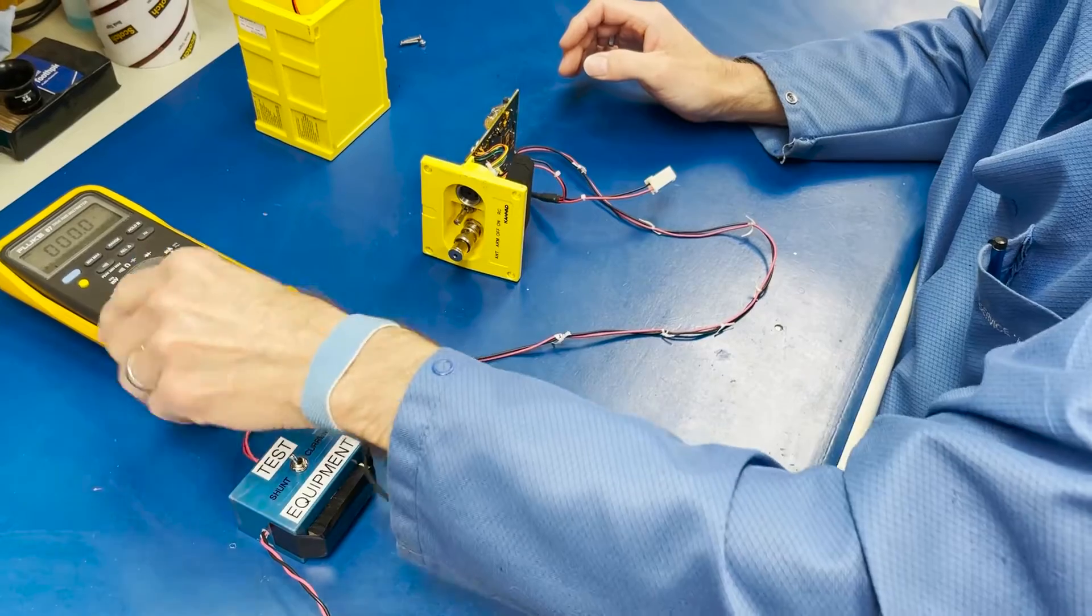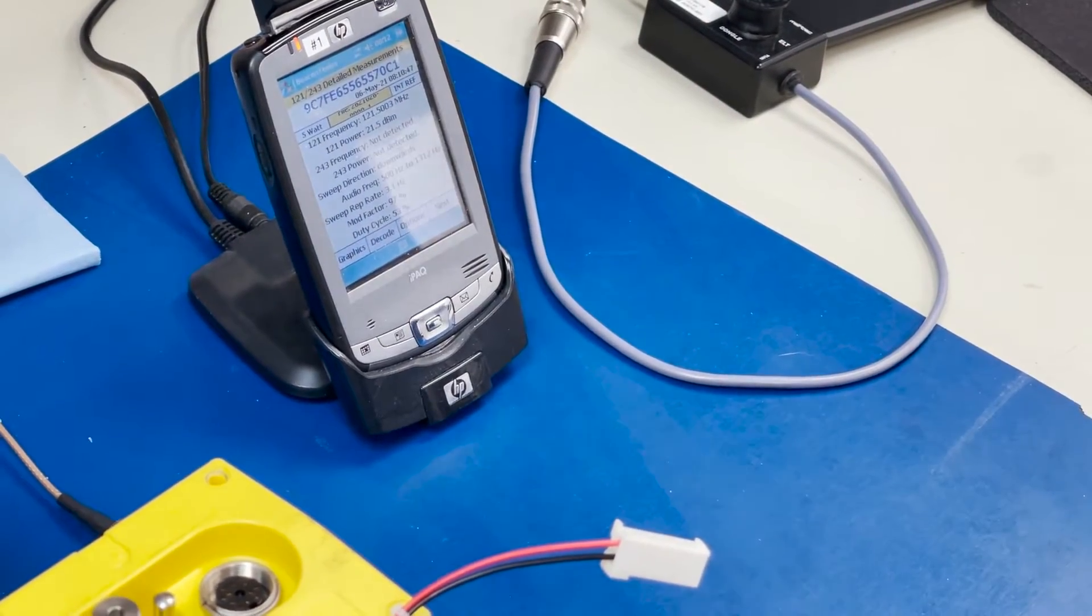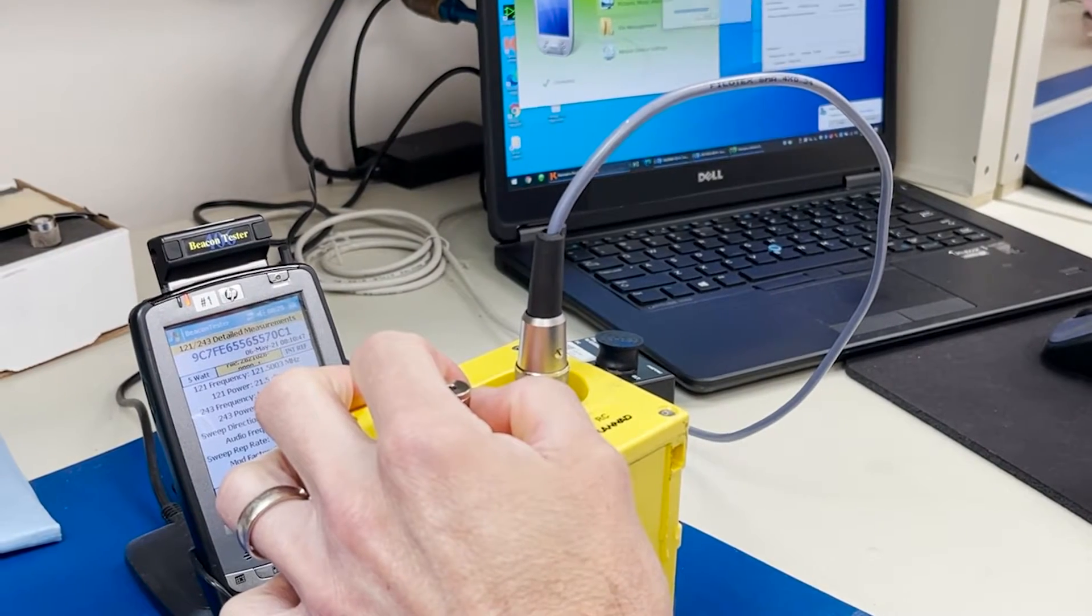We reset the counter which is very important because the counter tracks how many times the unit has gone through its processes as far as transmission. Not test, transmission which is very important for the battery.